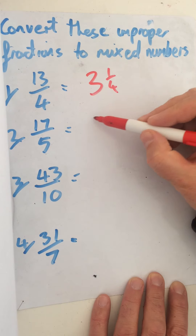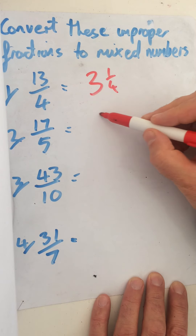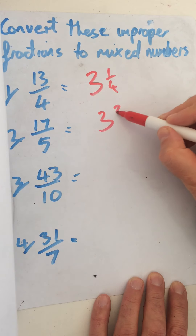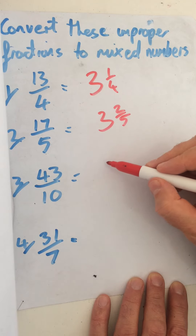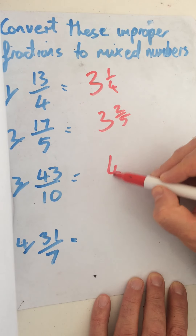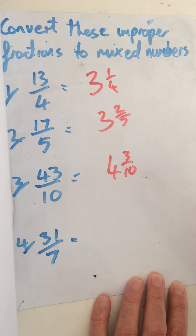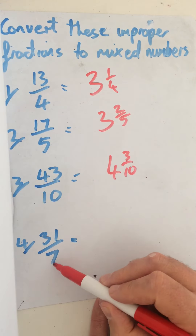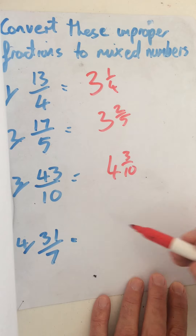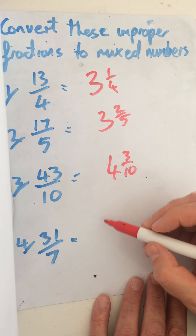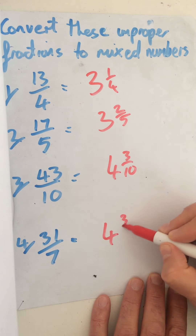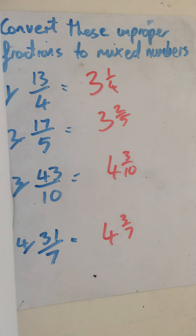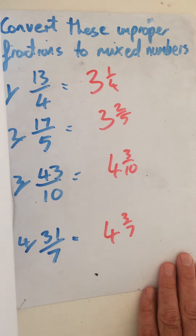The answers: three and a quarter; how many fives in there — three and two fifths; how many tenths in 43 — four and three tenths; how many sevens in 31 — four and three sevenths. Just give those a quick tick.